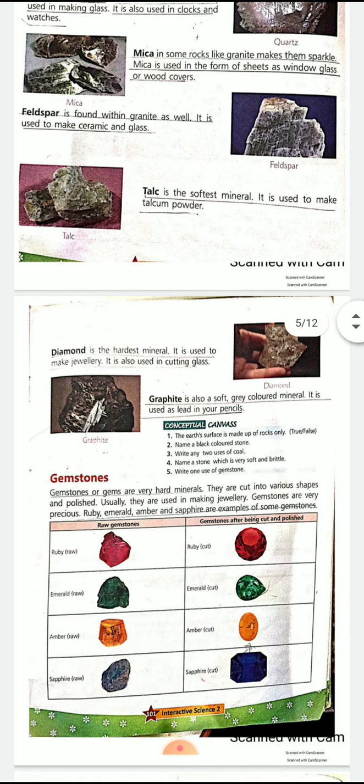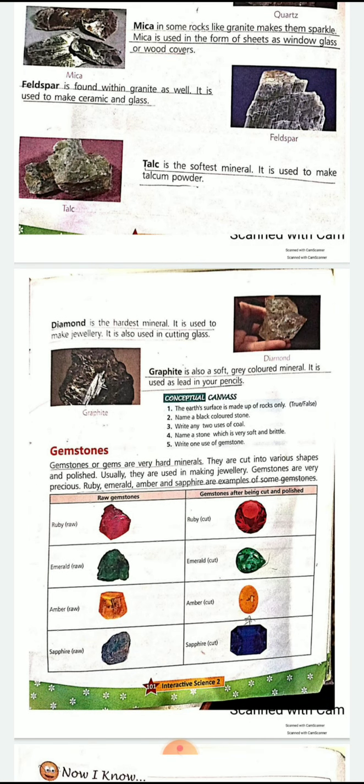These all are kinds of minerals only. You know diamond is one of the hardest minerals found on the earth — it is used for cutting glass also. Talc, you know talcum powder, it is made up of a mineral only. Then graphite is also a soft gray colored mineral.